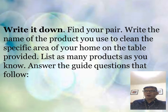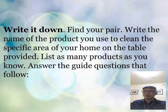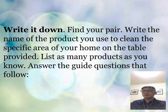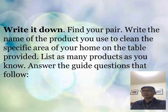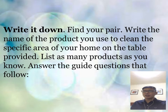I think you are all ready for your next activity, which is entitled Write It Down. This time, I request you to prepare a piece of paper to write your answers. The instruction is to write the name of the product you use to clean the specific area of your home. A table will be provided, and you may copy it. Also, list as many products as you know. Guide questions will follow afterwards.